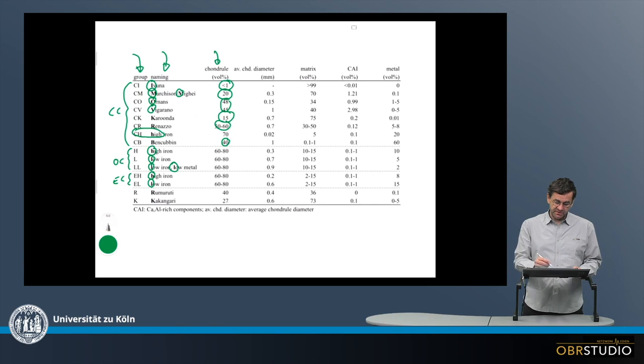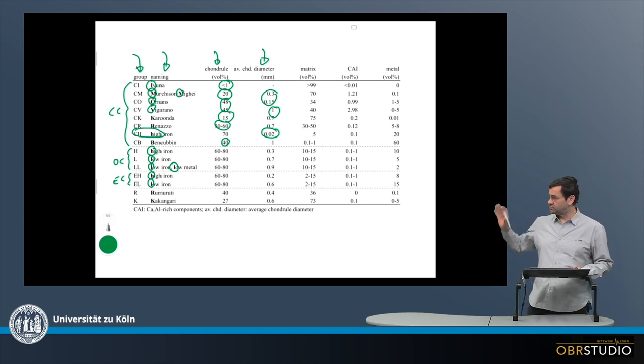The chondrule diameters are shown here as well in the fourth column. And these are highly variable, as you can see here. They start from as low as just 20 micrometers in the CH chondrites, although this is a special group. So typically, chondrule diameters are between something like 200 micrometers up to one millimeter.